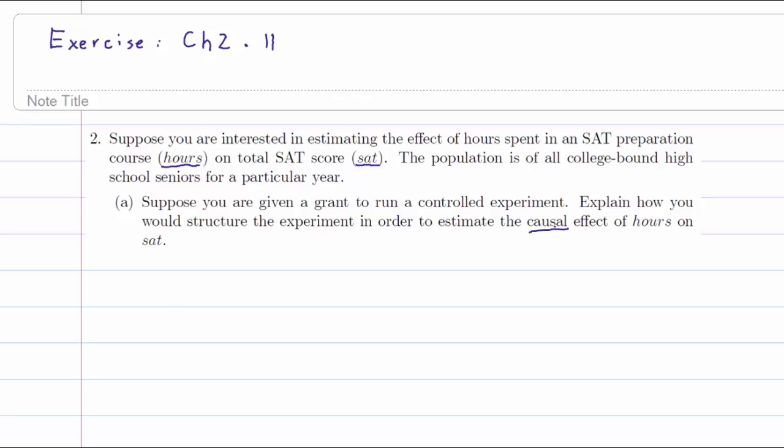Usually for an experiment, what you want to do is randomly assign the hours. Why do we want to do that?